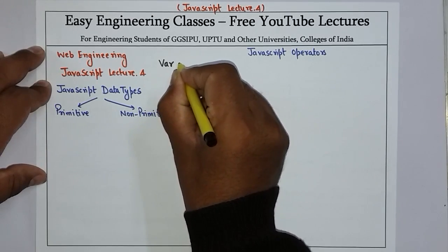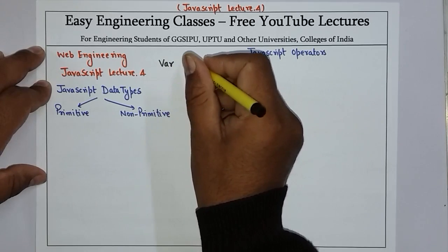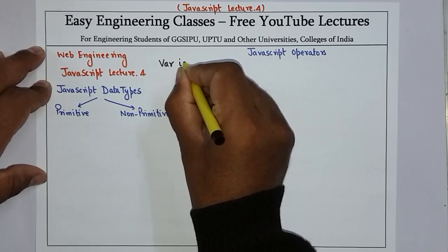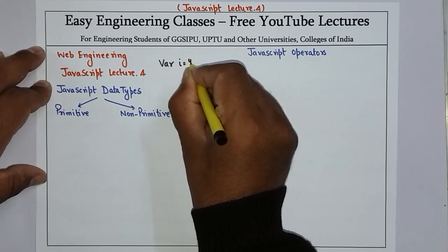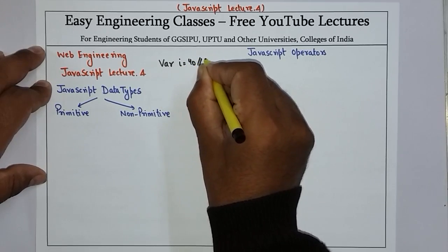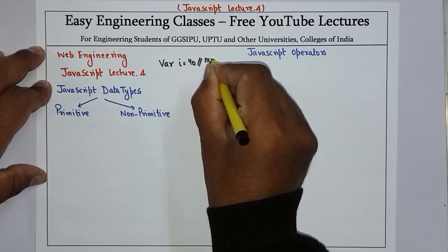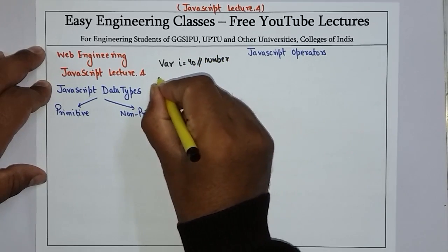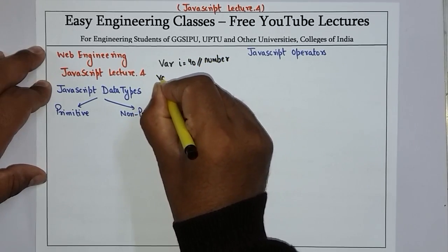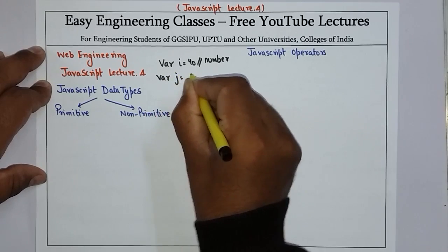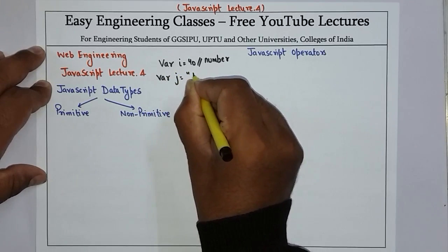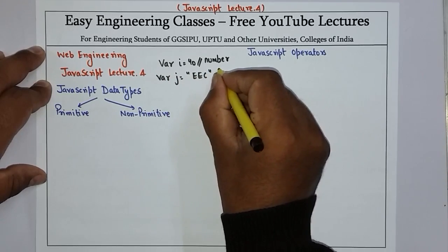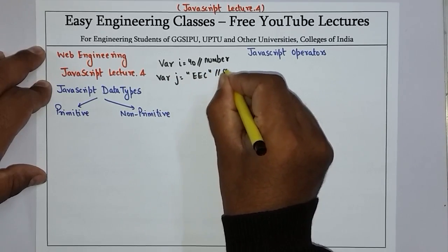You just write var and the variable name. For example, if var i equals 40, that means it is holding a number. Or if var j equals some string value, then it is holding a string.